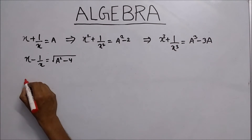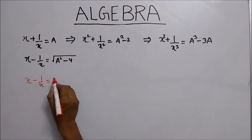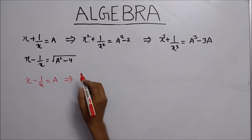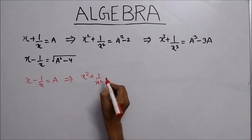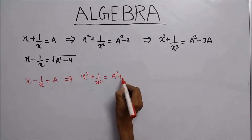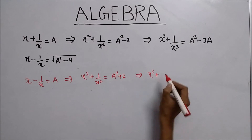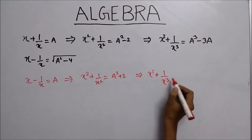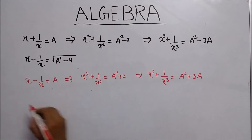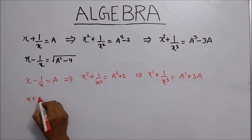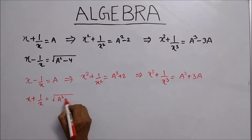When you see x minus 1 upon x equals a, just memorize: x squared plus 1 upon x squared equals a squared plus 2. x cubed plus 1 upon x cubed equals a cubed plus 3a. And x plus 1 upon x equals the square root of a squared plus 4.